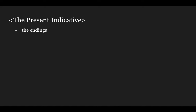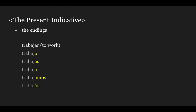So first, we're going to start off by learning the endings of the present indicative tense. We're going to learn it by conjugating the verb trabajar, which means 'to work.' You will have: yo trabajo, tú trabajas, él, ella, usted trabaja, nosotros, nosotras trabajamos, vosotros, vosotras trabajáis, ellos, ellas, ustedes trabajan. So you get the -o, -as, -a, -amos, -áis, -an endings for this verb.